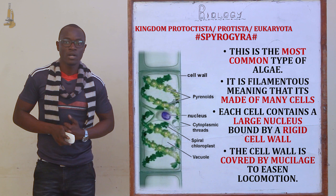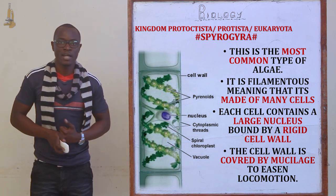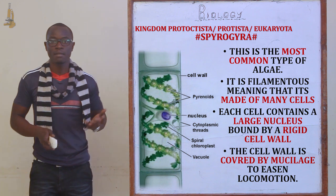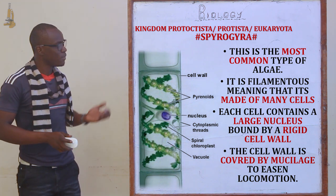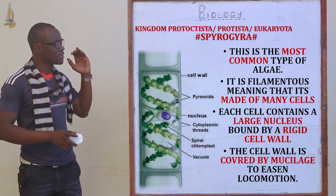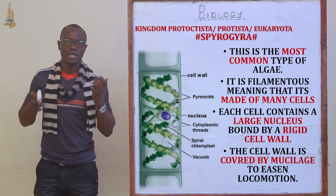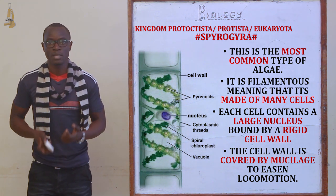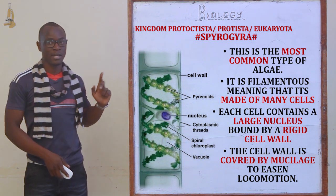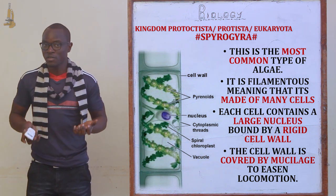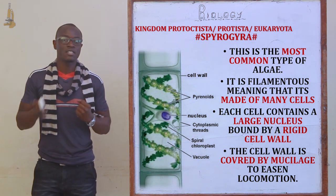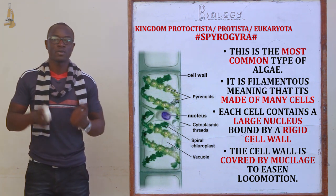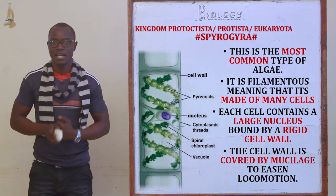The cell wall is basically covered by mucilage. As you can see in the diagram, there is the central plasma, the cell wall, the central nucleus, the spiral chloroplast, and also the pyrenoids. The function of the pyrenoids is that they trap the carbon dioxide molecules for the process of photosynthesis in the dark stage.